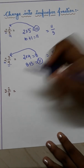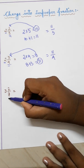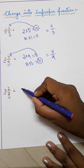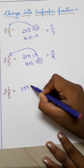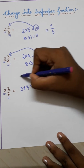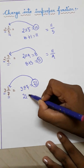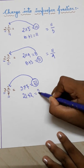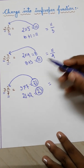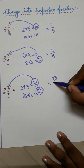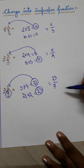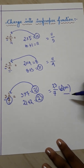In the third example, multiply the whole number by the denominator: 3 into 7 equals 21. Add 21 to the numerator: 21 plus 2 equals 23. Write 23 at the top and 7 at the bottom, so the answer is 23 by 7.